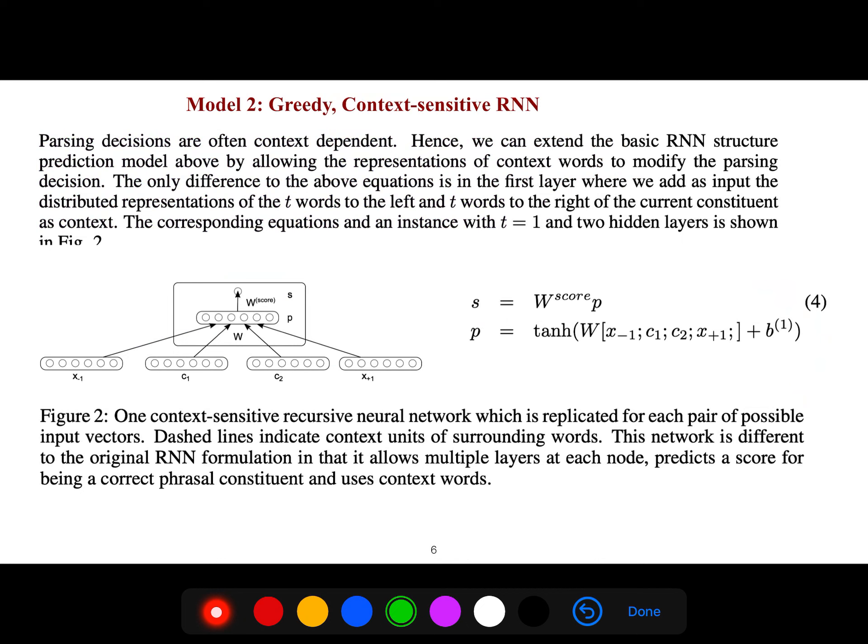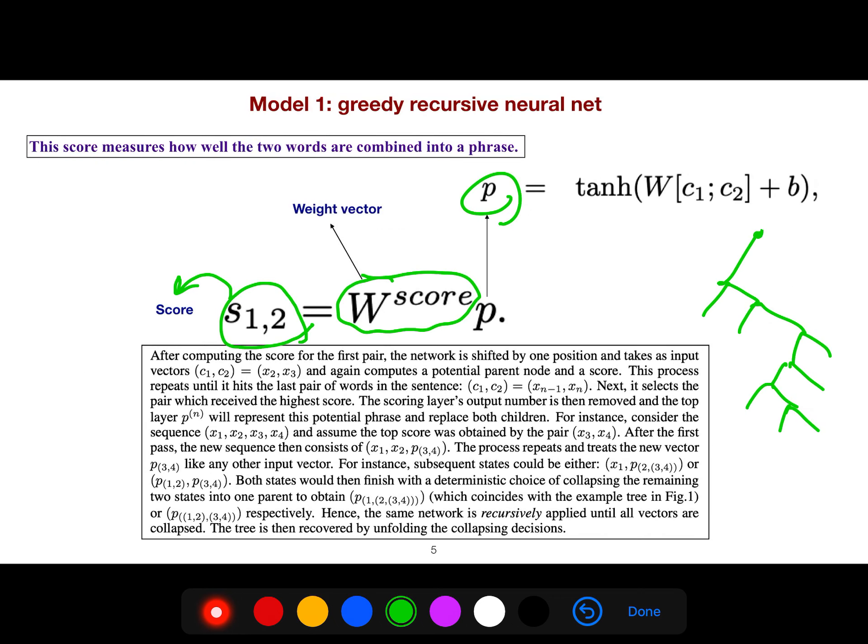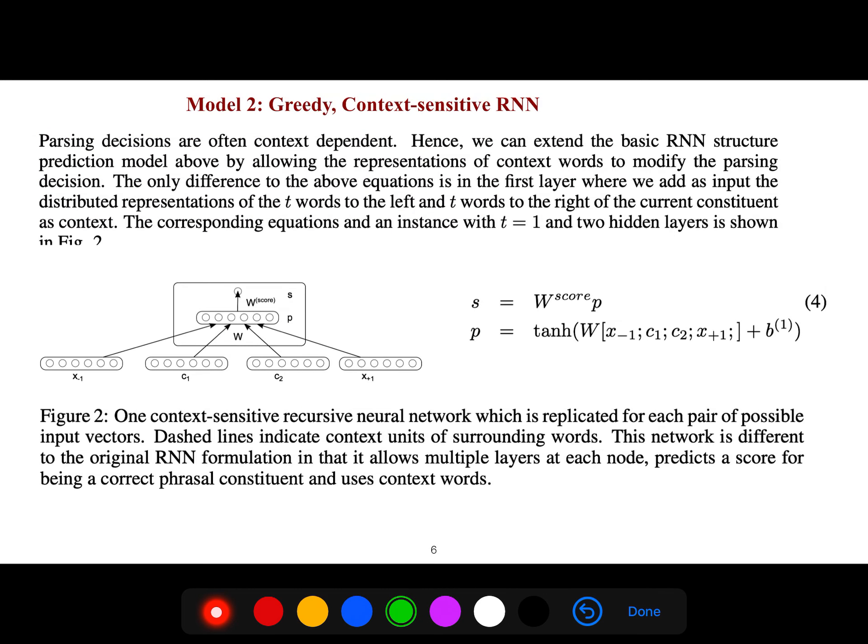So Christopher Manning very beautifully separated these models. First, he said, we only say we have greedy. It means as long as we get the score, we say which one matches together. We don't care about the future, what happens. As long as we have two things have great score, they combine to each other, like two atoms that combine to each other, becomes a molecule, and larger molecules, and so on.